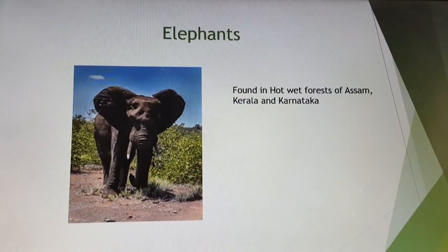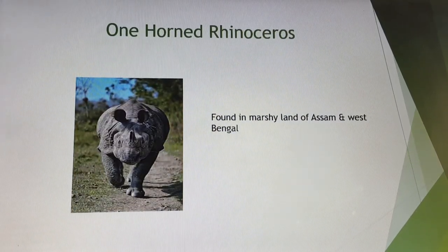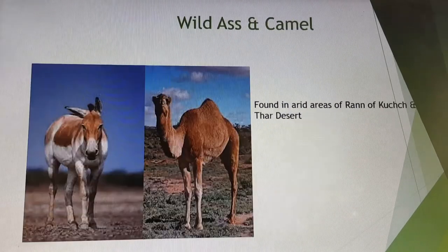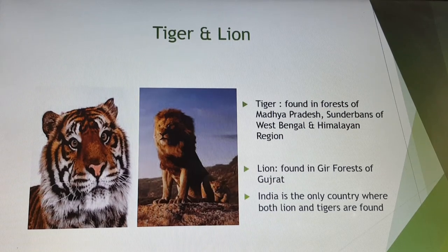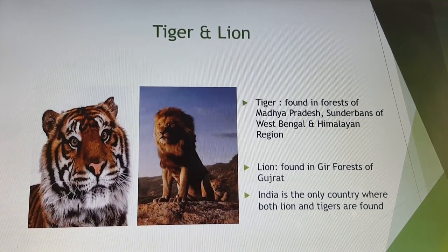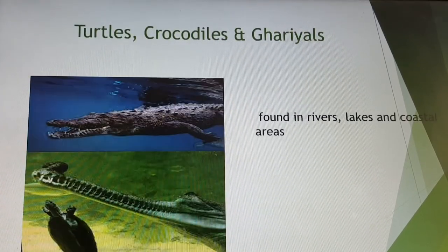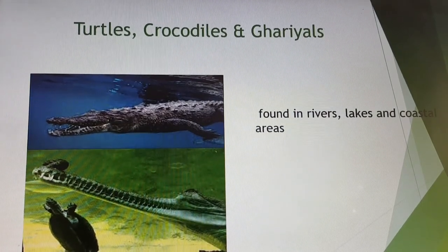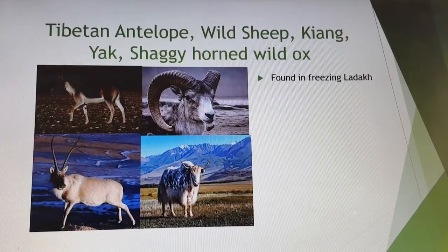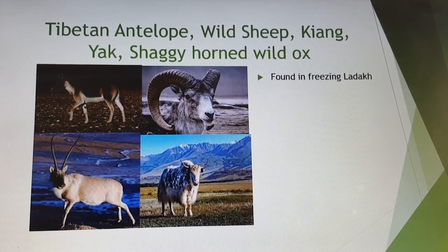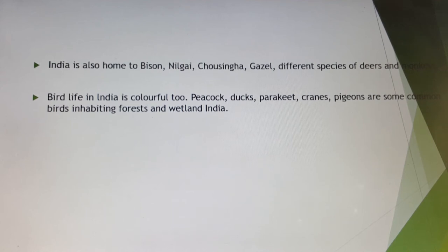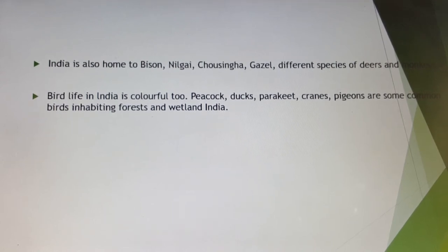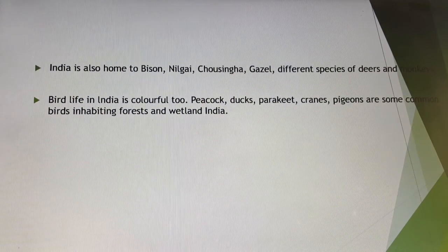Elephants are found in the hot wet forests of Assam, Kerala and Karnataka. One-horned rhinoceros are found in the marshy land of Assam and West Bengal. Wild ass and camel are found in the arid areas of Rann of Kutch and the Thar desert. India is the only country where both lion and tigers are found — tigers in the forests of Madhya Pradesh, Sundarbans of West Bengal and the Himalayan region, and lions in the Gir forests of Gujarat. Turtles, crocodiles and ghariyals are found in rivers, lakes, coastal and marshy areas. Tibetan antelope, wild sheep, kyang, yak, and one-horned wild ox are found in freezing Ladakh. India is also home to Nilgai, Chinkara, Gazel, and various species of deer and monkeys. Bird life is equally colourful — peacocks, ducks, parakeets, cranes and pigeons inhabit the forests and wetlands of India.